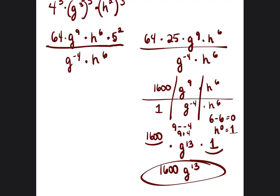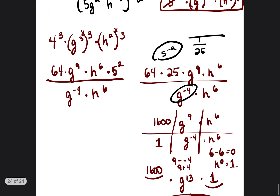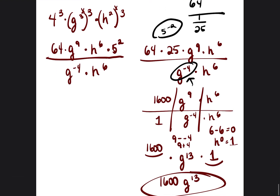A question I know I'll get is: why did I put 5 to the negative 2 on the top but leave g to the negative 4 on the bottom? It was just easier. Anytime you have a whole number to a negative power, it's simpler than putting it as 1 over 25 under a fraction. For g to the negative 4, I waited because I knew I'd be dividing anyway and wanted to see whether the result would be positive or negative — as you'll see in the next example.